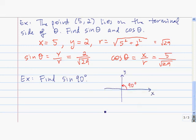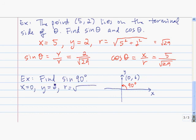Start by drawing the angle in standard position, which is 90 degrees. We need to find a point on the terminal side of 90 degrees — the positive y-axis is on the terminal side of 90 degrees. Let's choose the point (0, 6). This means x is 0, y is 6, and r is the square root of 0 squared plus 6 squared, which equals 6. So sine of 90 degrees equals the y-coordinate divided by r, which is 6 over 6, equals 1. Using these new definitions, we can find the sine of any angle we want, and the sine of 90 degrees equals 1 — that's something that should be memorized.